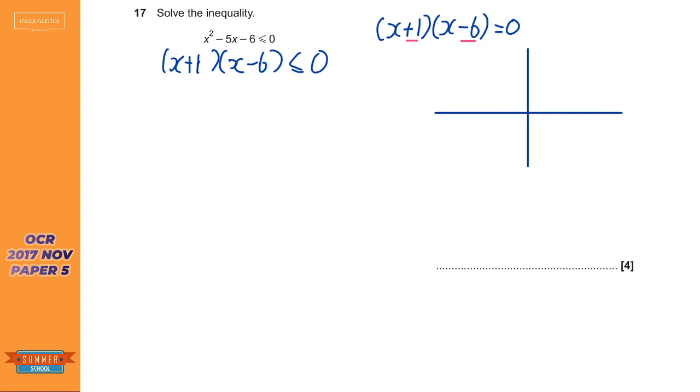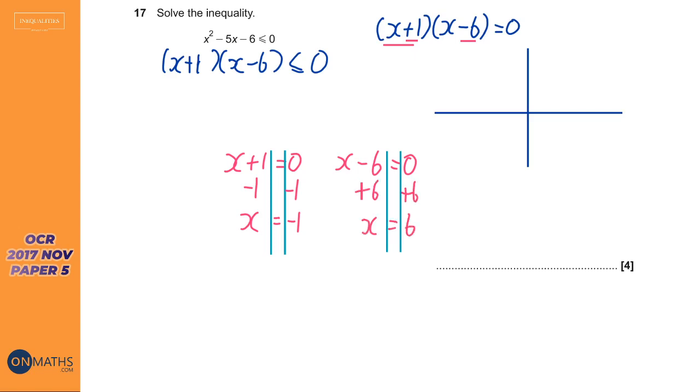So we need to solve those first. And to solve it, you get each bracket equal to 0. So X plus 1 equals 0, and solve that. Take away 1 both sides, X equals minus 1. And similarly, we'll do the same with X minus 6. Plus 6 both sides, X equals 6. So our two roots are minus 1, which will be here, and this is a sketch so it doesn't need to be accurate, and 6.